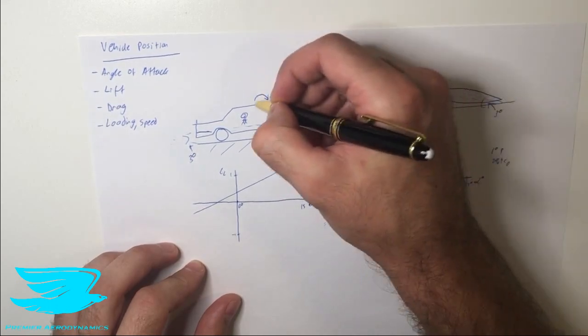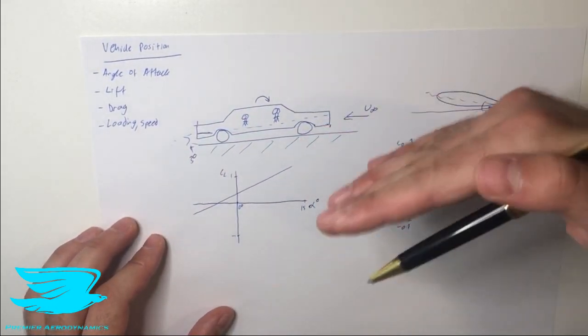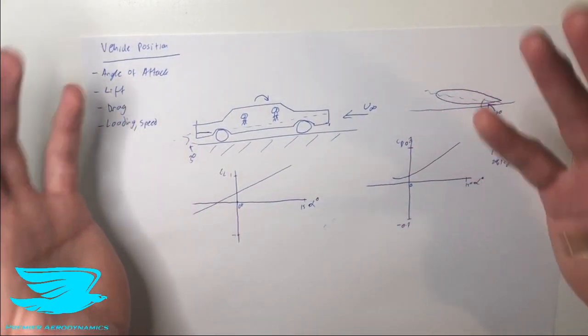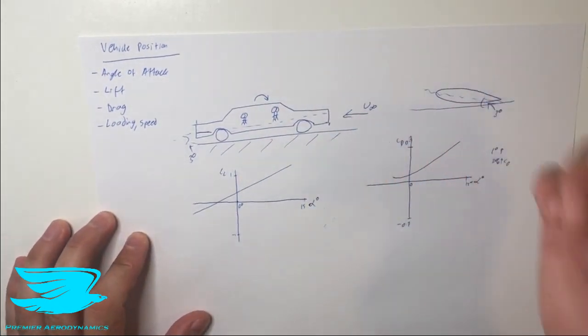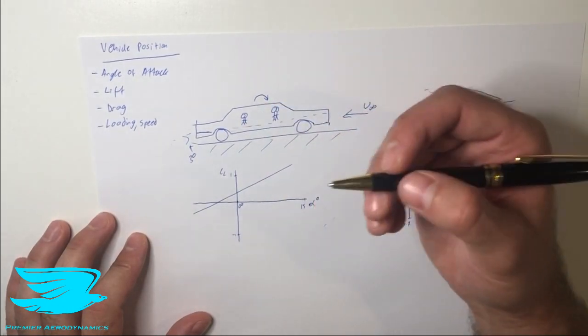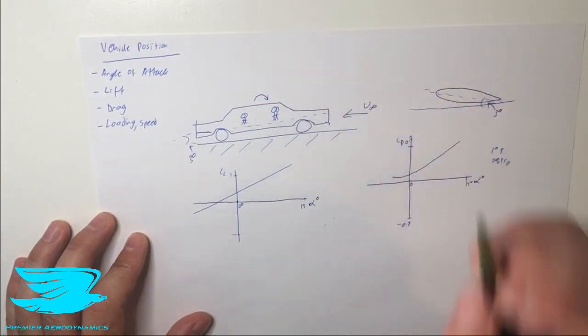So it might pitch downwards, pitch upwards, depending on where the people are, how big they are. And that can change the angle of attack of the car. Also the suspension's stiffness will also change that as well. In addition, the speed will also change how the car is pitching. And this is because the flow hits the car and the car produces the lift.